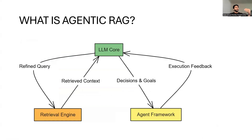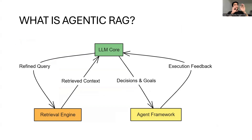Now let's go into the technical details. As you can see here, we have three components: LLM Core, Retrieval Engine, and Agent Framework. The arrow marks represent the interactions — we have refined query, retrieved context, decisions and goals, and execution feedback. Here is how it works.